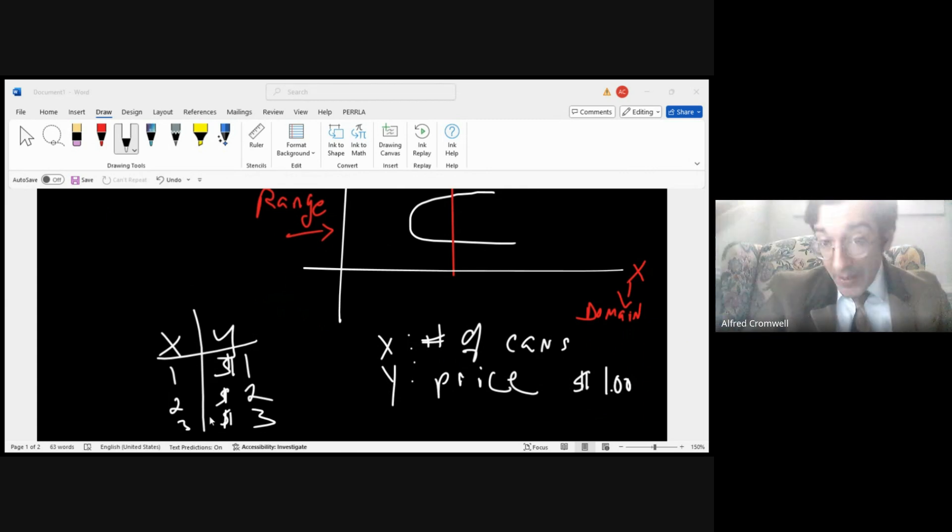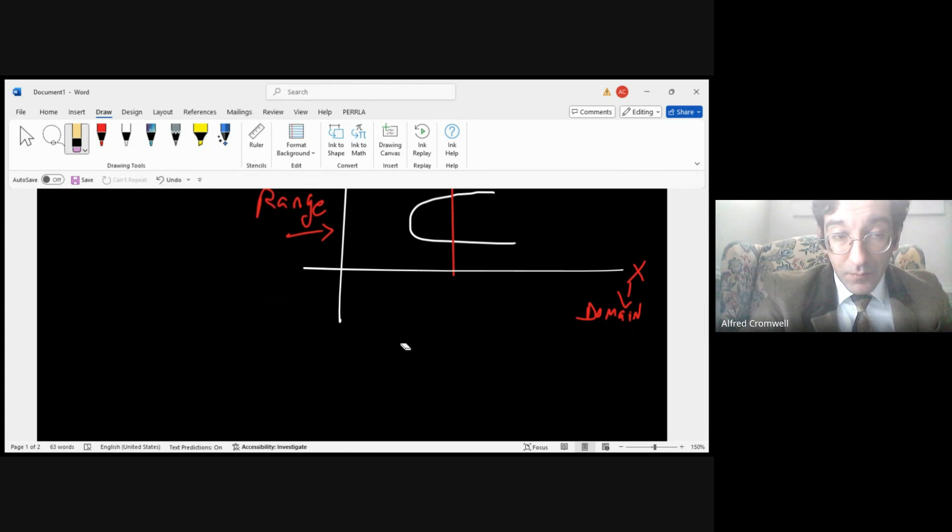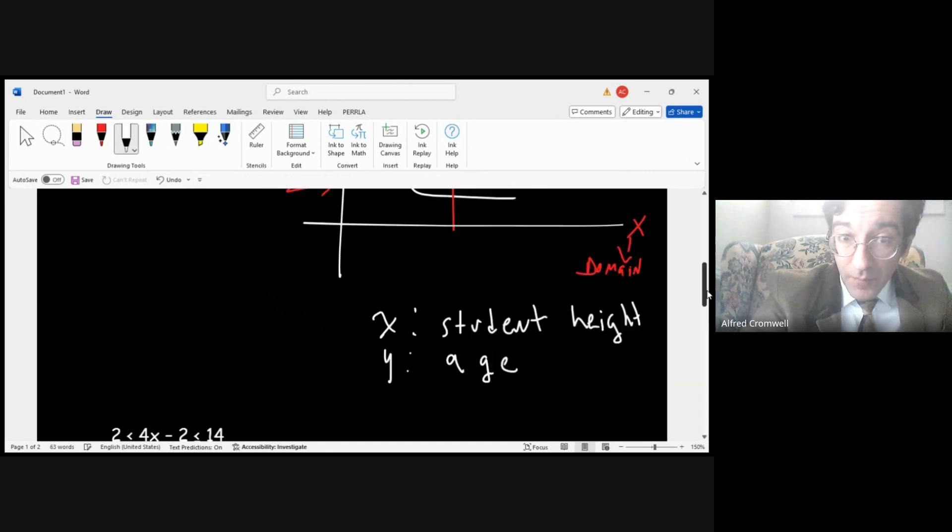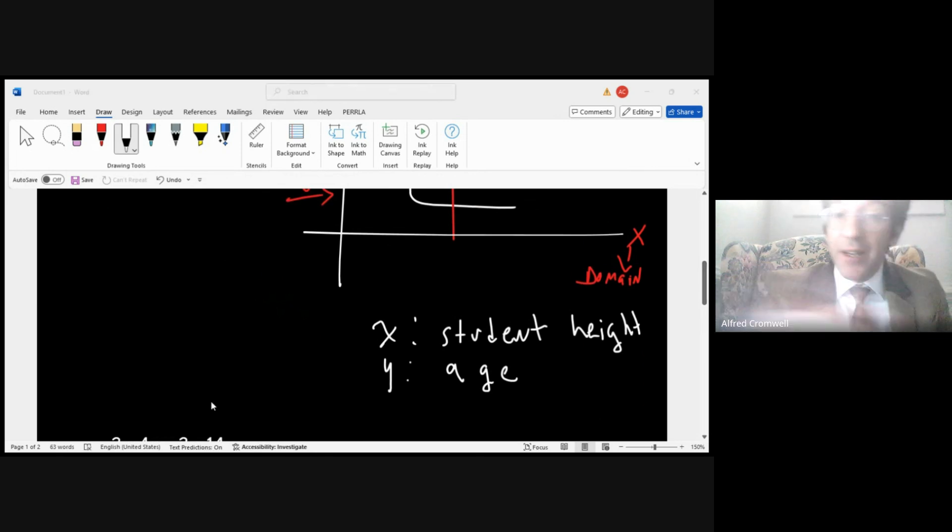On the other hand, let's say that x is the height of a student and y is the age of a student. We can't do that because it is possible to have more than one—different ages can have the same height, so that does not represent a function. You could be 5 foot 5 and you could be 40 years old, 18 years old, or 25 years old. So it's not going to work out as a function.